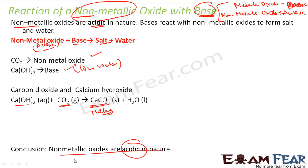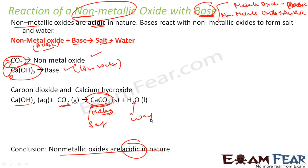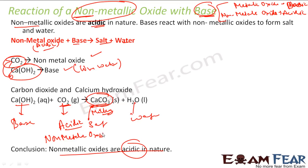We knew it theoretically, but practically we did this experiment. We have this carbon dioxide gas and lime water — calcium hydroxide — as a base. We pass carbon dioxide into lime water, and we have seen this in many other experiments. The solution turns milky, and the salt you get is calcium carbonate, plus water. Calcium hydroxide is the base, and carbon dioxide is the non-metallic oxide, which is acidic in nature.